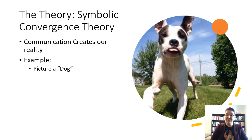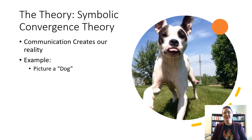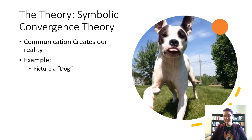She is part greyhound, so she can run over 30 miles per hour. She absolutely loves to jump in the car and go for a car ride — that's one of those things that will make her wiggle. When she's running towards you, she almost always has her tongue sticking out because she's so excited to lick you. Is this what you pictured when I used the symbol 'dog'? No, of course not. I had to use additional symbols for us to share a reality.